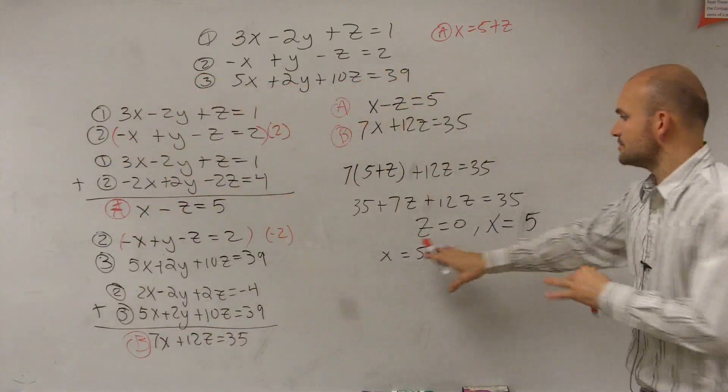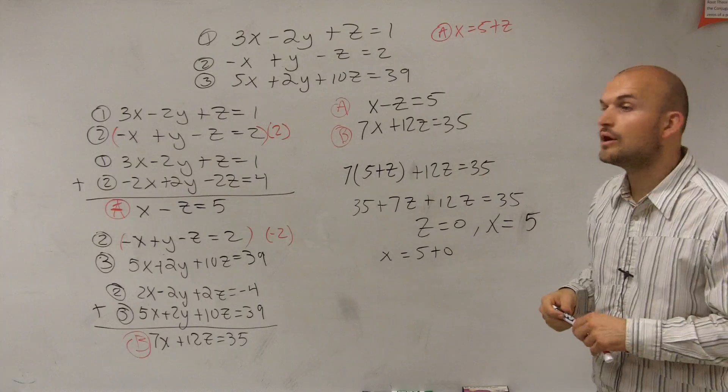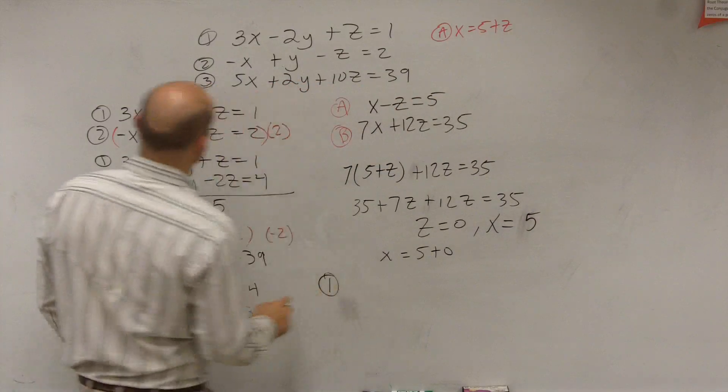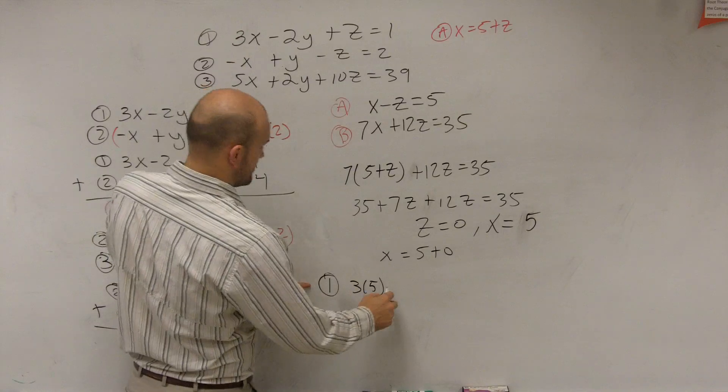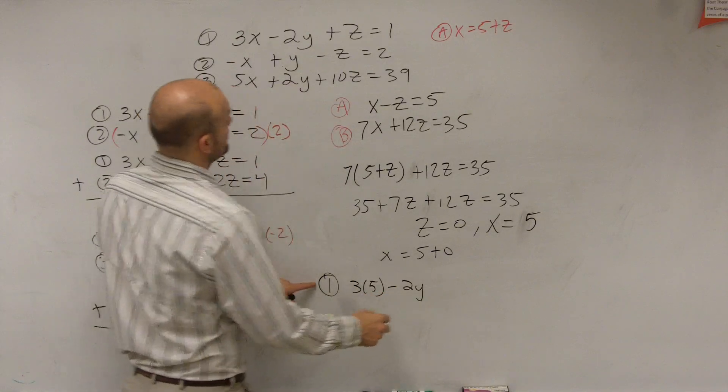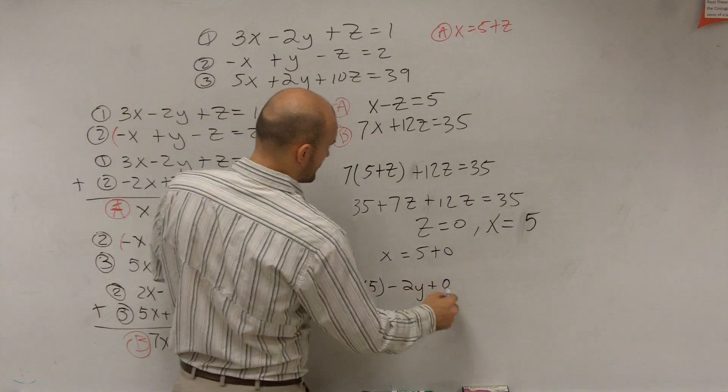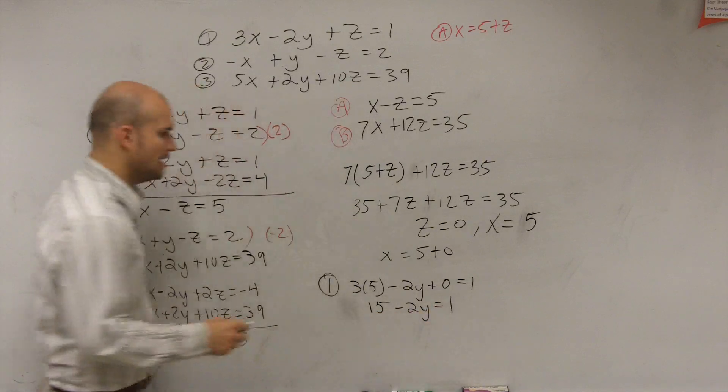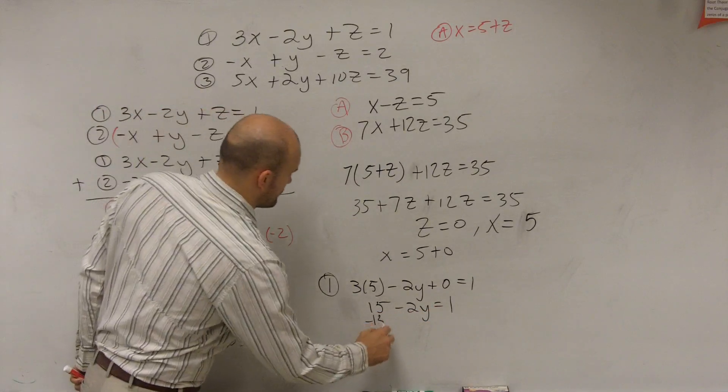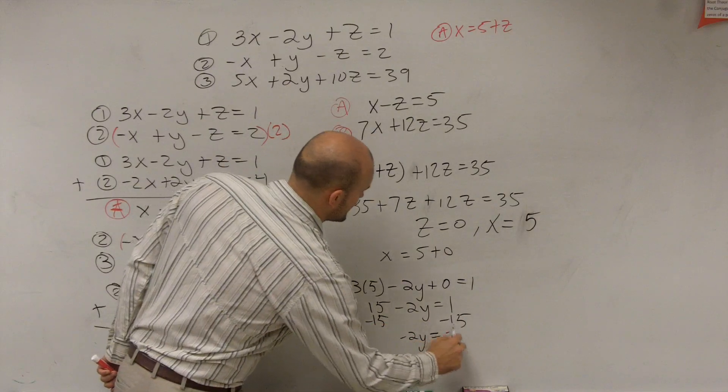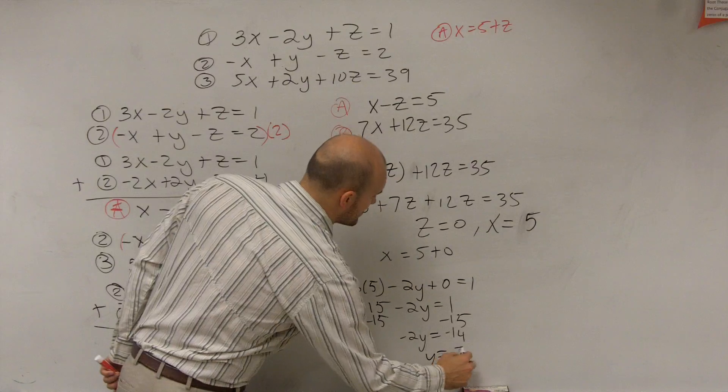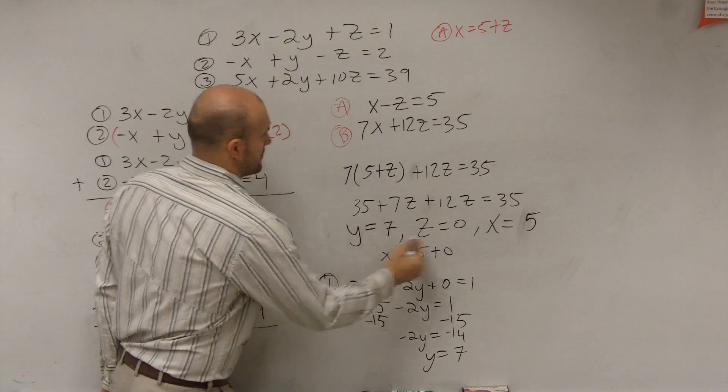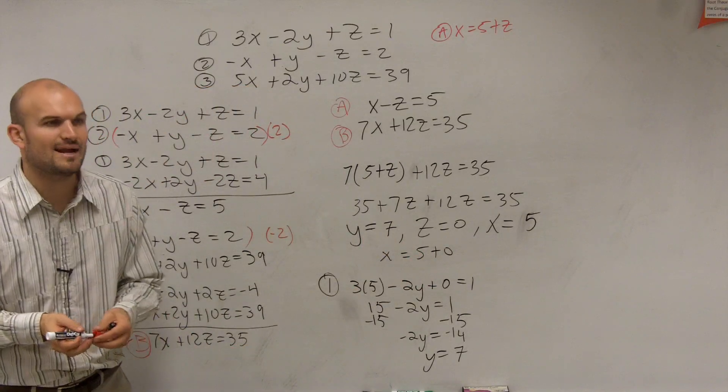So what you're going to want to do is plug all these values in. So when I plug in 5, let's plug it into equation 1. You have 3 times 5 minus 2 times y plus z, which is 0 equals 1. So therefore, you get 15 minus 2y equals 1. Subtract 15, so negative 2y equals negative 14. Then y equals positive 7. So your solution is going to be y equals 7, z equals 0, and x equals 5.